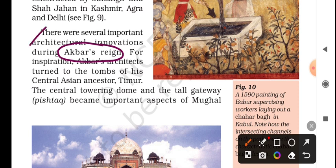They used new ideas in architecture. Akbar was also inspired by Central Asian ancestors. Even Taj Mahal — Shah Jahan built it as a tomb for his wife, and later Shah Jahan himself was also buried in that same Taj Mahal.